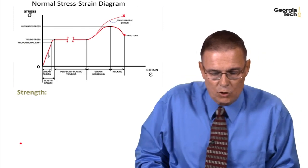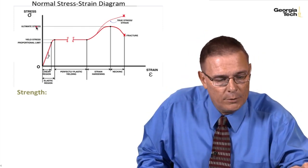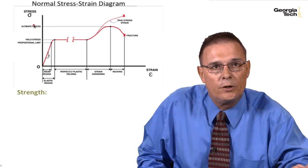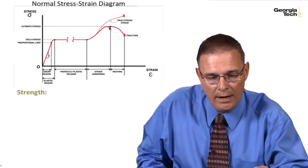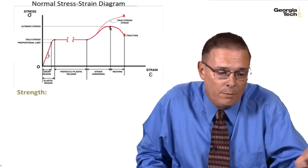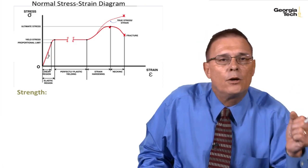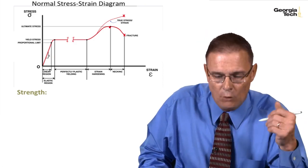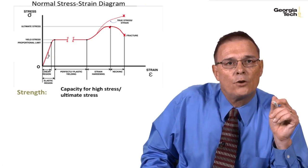The next one we'll talk about is strength, and that's the capacity for high stress or the material where the material has its ultimate stress, or what we also call ultimate strain. A strong material would be something like multi-walled carbon nanotubes. A lot of ultimate stress that it can take.